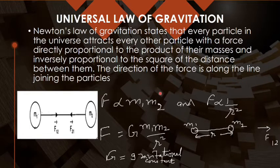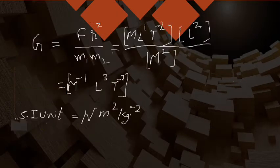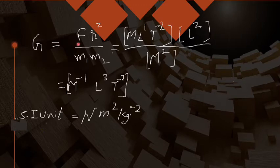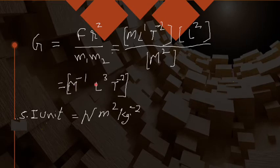Once this law is clear, you can find the dimensional formula for capital G, the gravitational constant. Using the dimensions of F as MLT⁻², distance as L, and mass as M, you get the dimensional formula for G as M⁻¹L³T⁻². The SI unit is newton meter squared per kilogram squared.